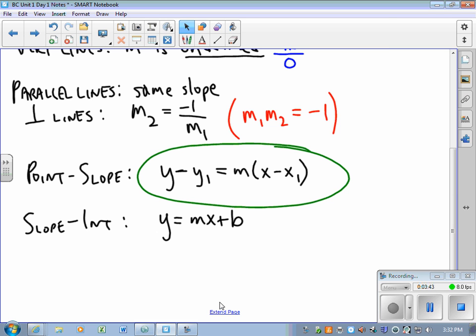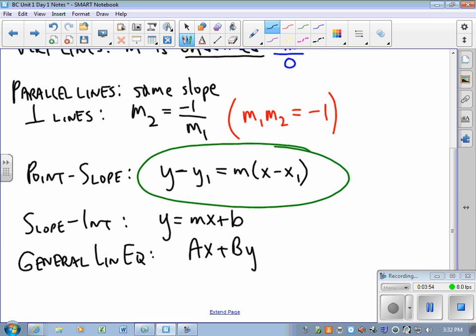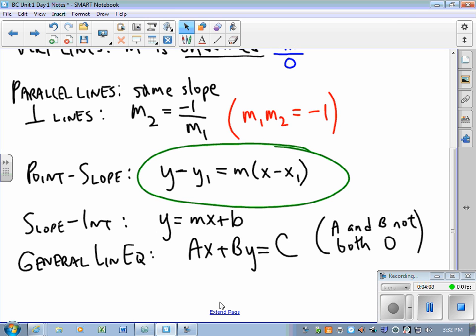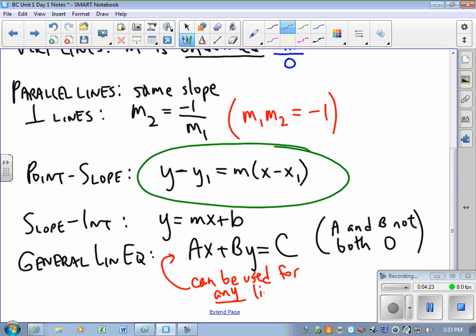A general linear equation can be expressed in the form Ax plus By equals C, where A and B are not both zero. Clearly, if A and B are both zero, that's not much of an equation.